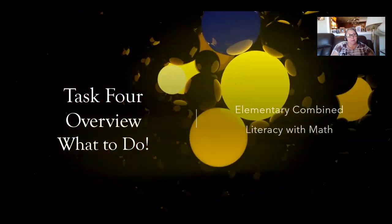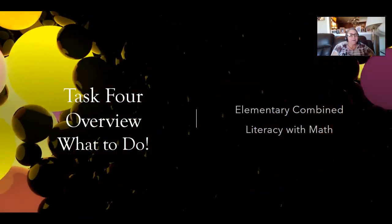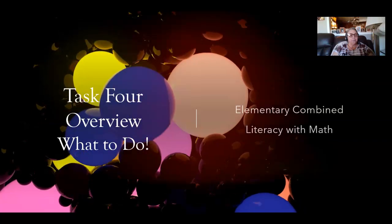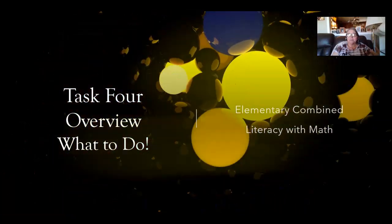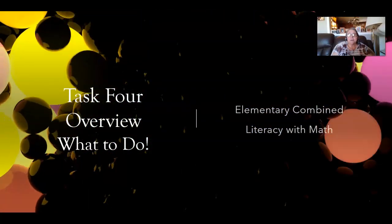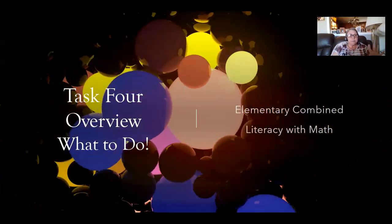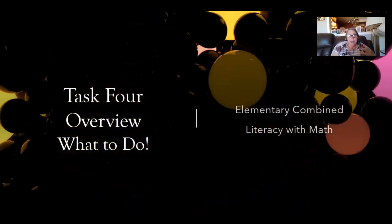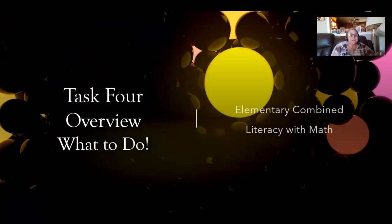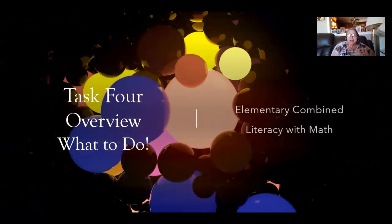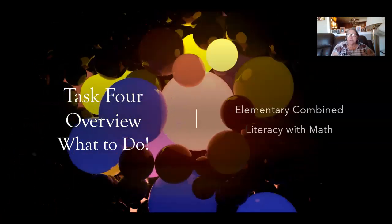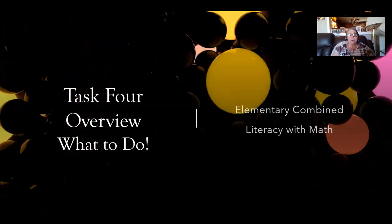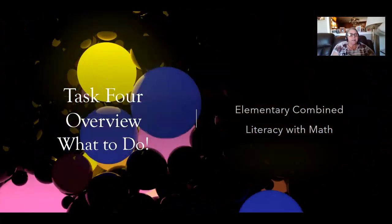This is Mamaw Yates, otherwise known as Terrell Yates, and I'm here to finally give you your Task 4 overview that so many of you have asked for. This particular one is the Elementary Combined Literacy and Math. Not everybody has a Task 4 — if you have four tasks with 18 rubrics, then this is for you. For everybody else, this is not part of your 15-rubric or 13-rubric handbooks. So let's get started.